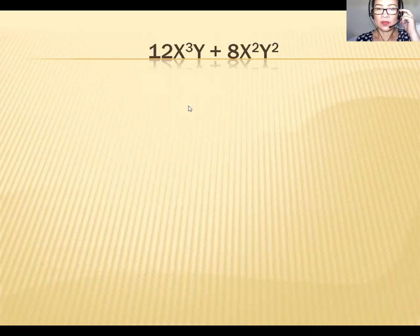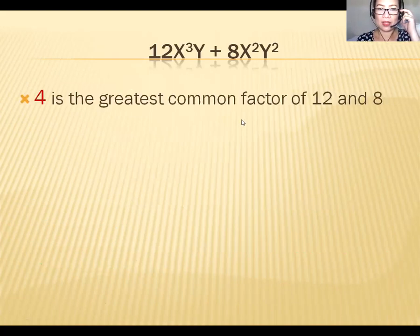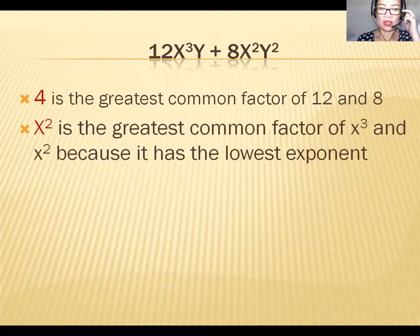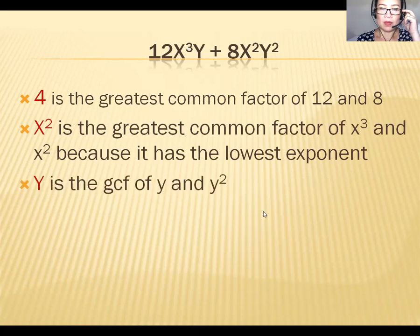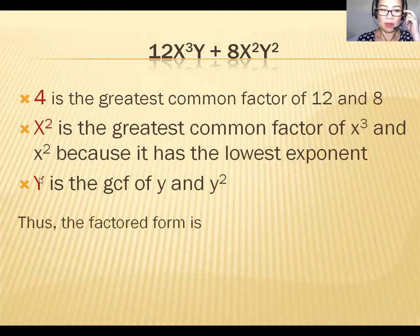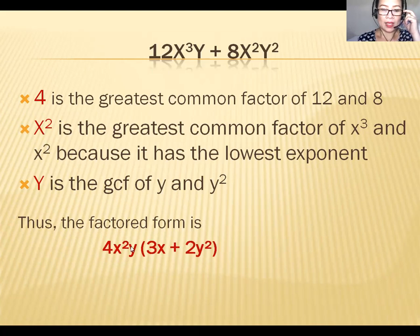Next example: 12x³y + 8x²y². The greatest common factor for 12 and 8 is 4. The GCF of the variable x is x², since x² is smaller than x³. The GCF for y is y¹. So the GCF is 4x²y. Divide each term: the factored form is 4x²y(3x + 2y²).